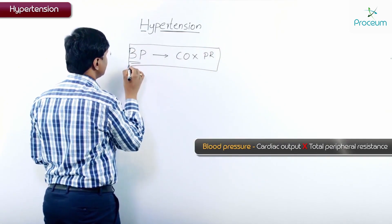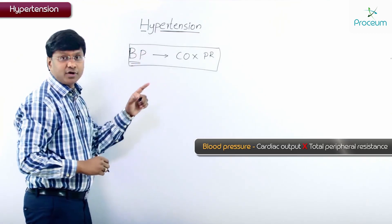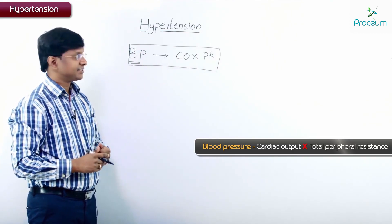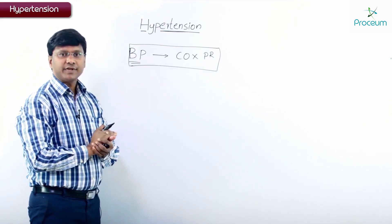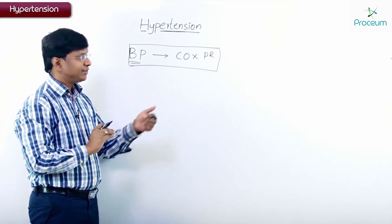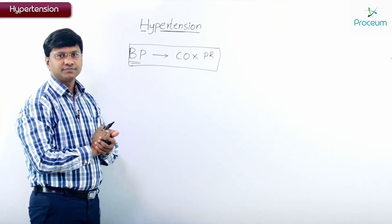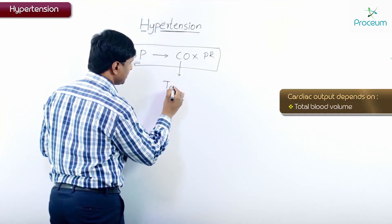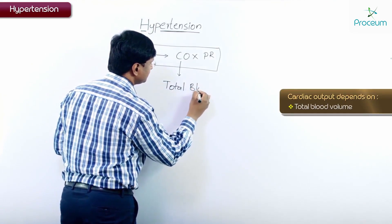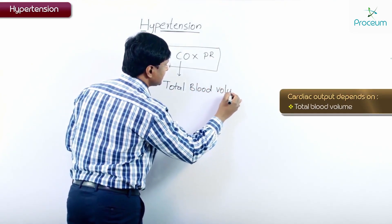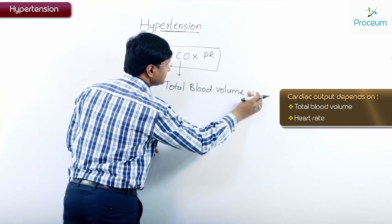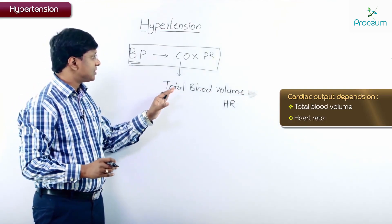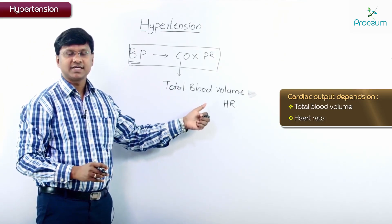These two together constitute the blood pressure — the product of cardiac output and total peripheral resistance. Now, taking the individual components: cardiac output is dependent on the total blood volume, as well as the heart rate.